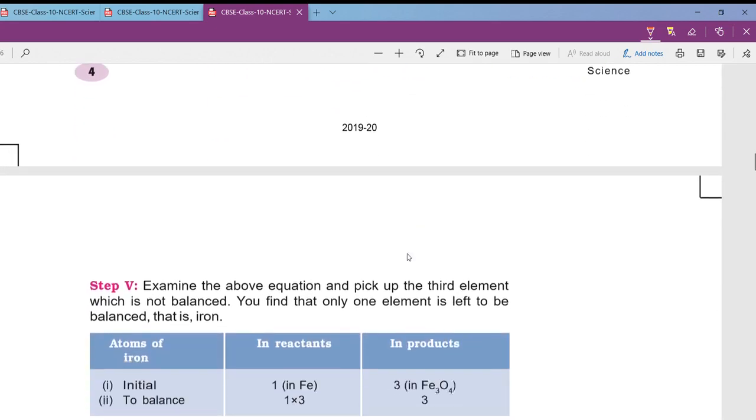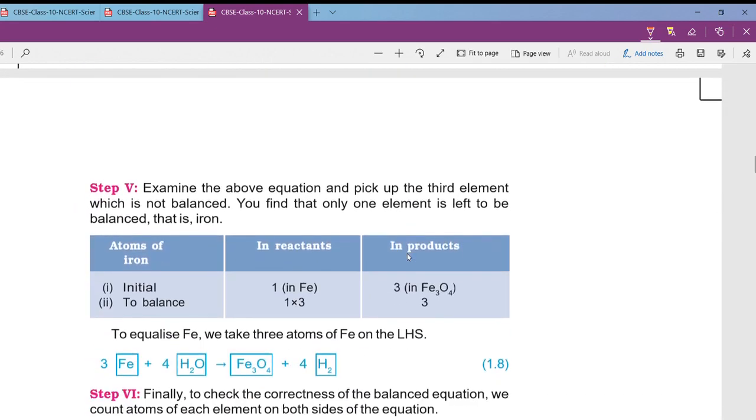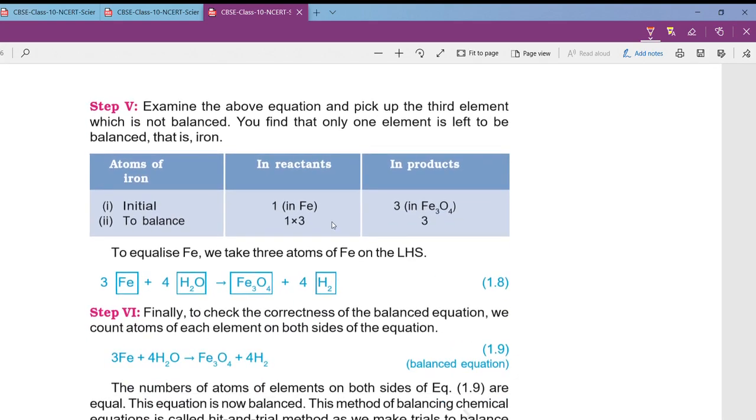Now after this step you will see that only ferrous is not balanced. What is the number of ferrous in the reactant side? Only one Fe plus four H2O, so only one ferrous atom. In the product side there are three. So what you can do? Multiply into three on the reactant side. The equation now becomes three Fe plus four water molecules giving rise to ferrous or ferric oxide plus four molecules of hydrogen gas.